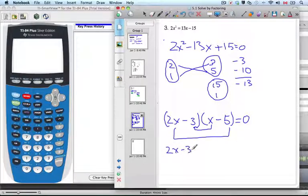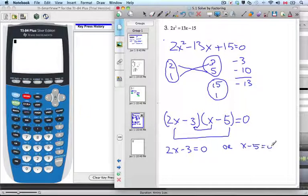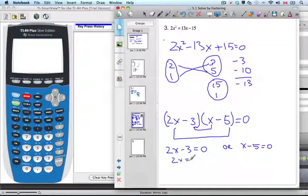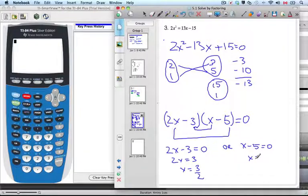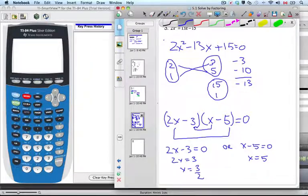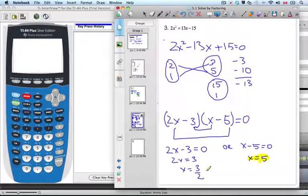Apply the null factor law. 2x - 3 = 0, or x - 5 = 0. I'm going to add the 3 and then divide by 2. This side, I'm going to simply add 5. And so I know my answers are x = 5 and x = 3/2.